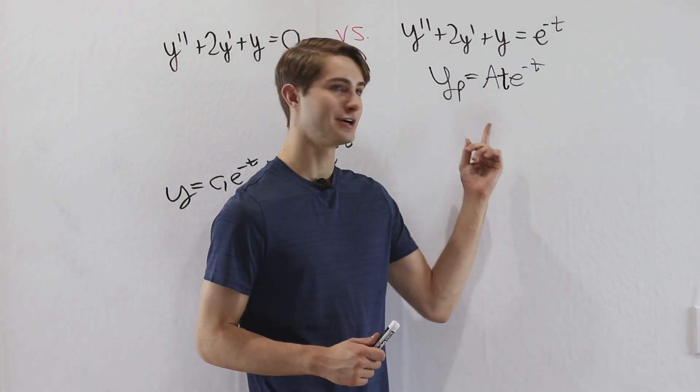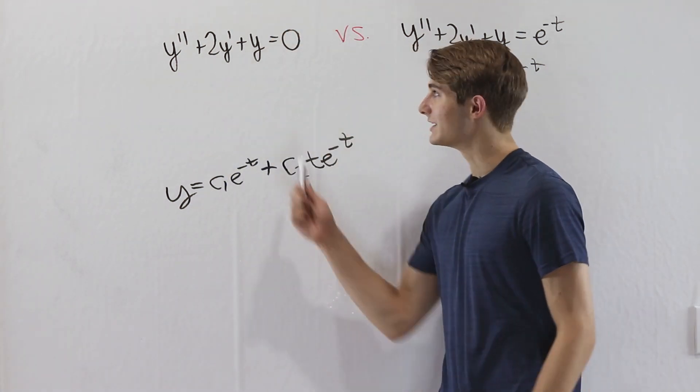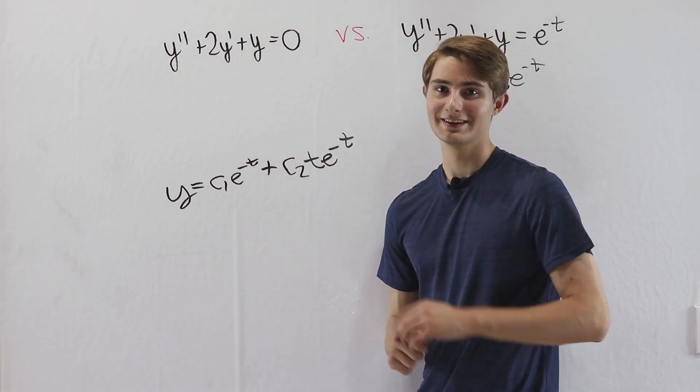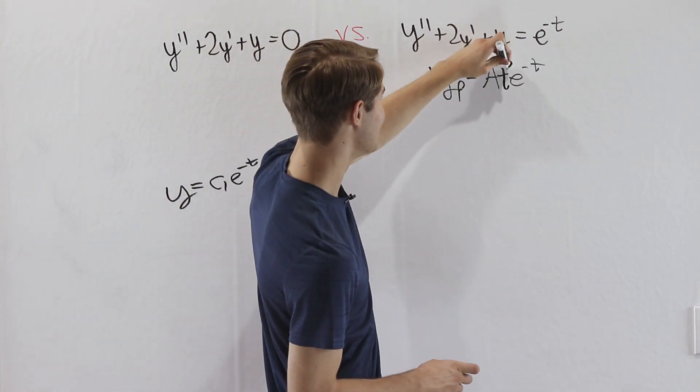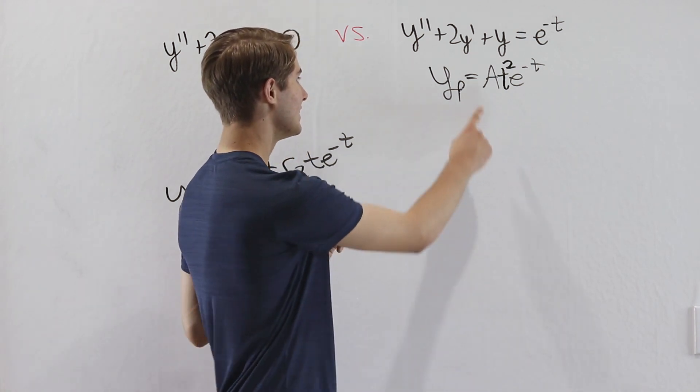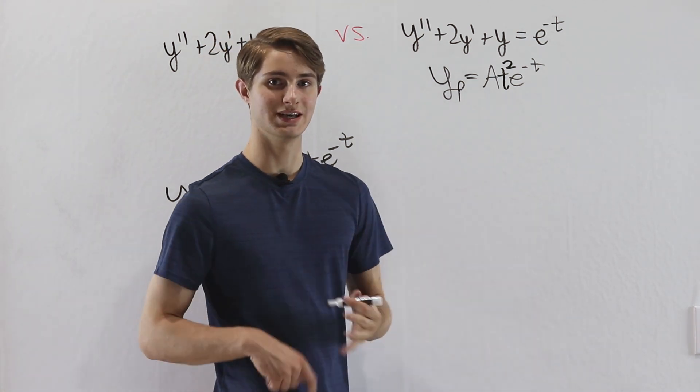And you might be saying, hold on a minute mu prime, look at this, a t e to the negative t. That's the other solution that we got to this equation, it's still equal to 0. What are we going to do now? Take a guess. Of course, we are going to multiply by t again, so we have a t squared e to the negative t. And now we can differentiate this twice and plug it into our equation to get the solution.